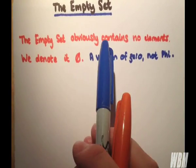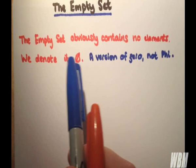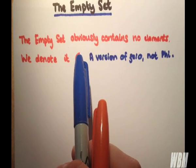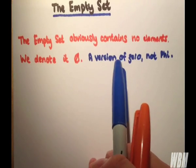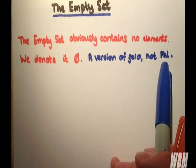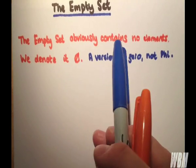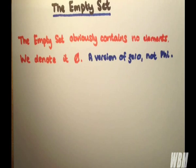So the empty set obviously contains no elements. We denote it by this symbol here, which is actually a version of zero and not phi, the Greek symbol. So this is not phi or theta, it's actually a separate symbol altogether.